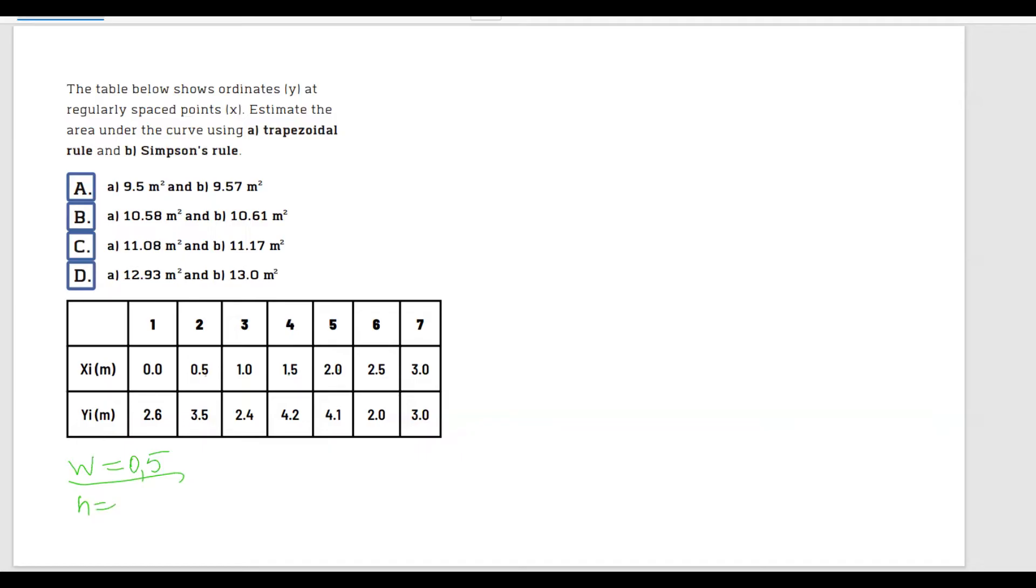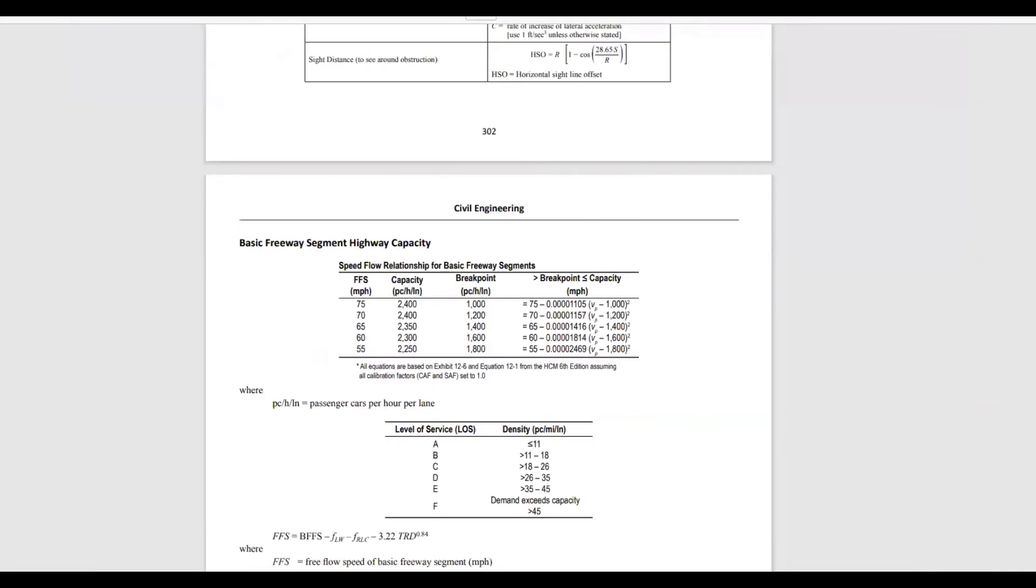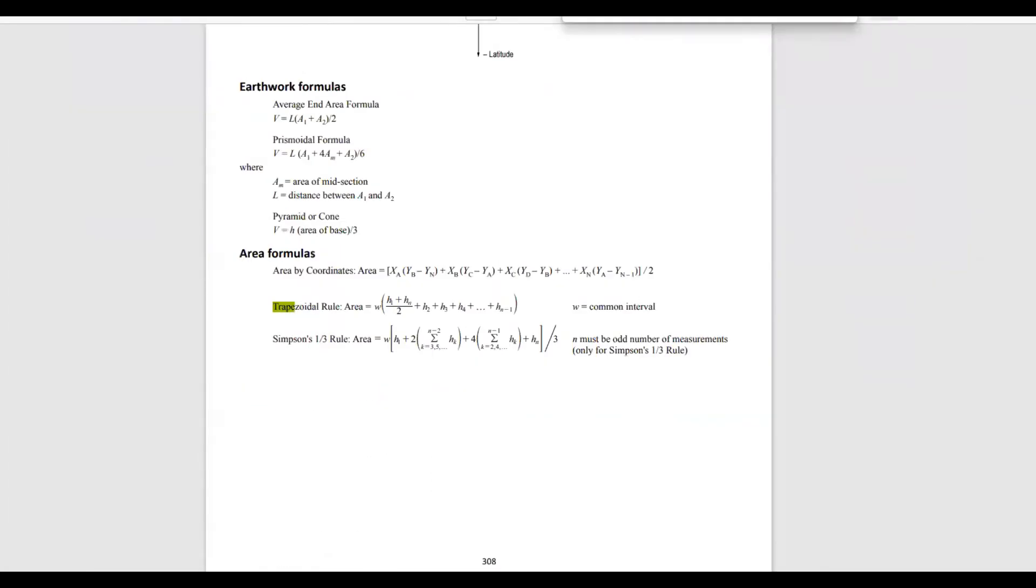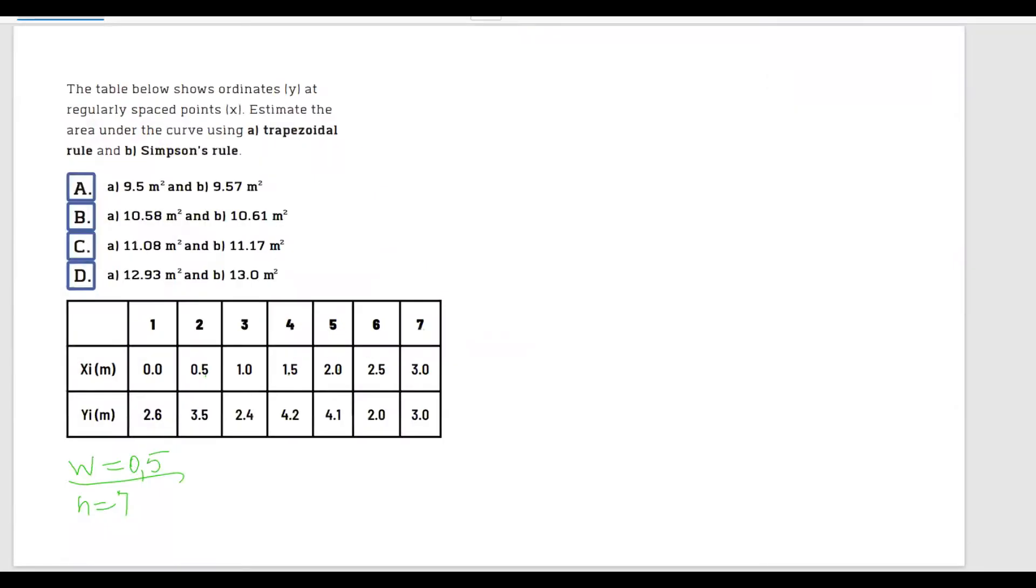And also we know n equals to seven intervals, which means we're able to use Simpson's rule. If we had an even number of intervals we were not able to do that. In case you have an example like this on the exam, the only thing you have to do is just go to the FE handbook and type trapezoidal rule, and it's going to lead you straight to the formula that you need to use, or Simpson's rule, pretty straightforward.